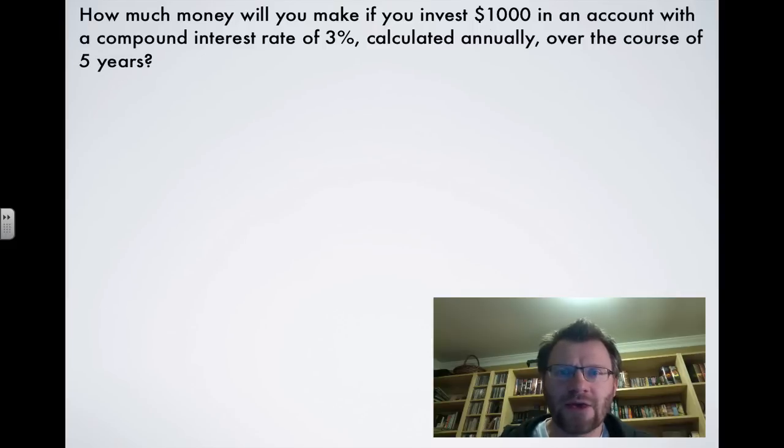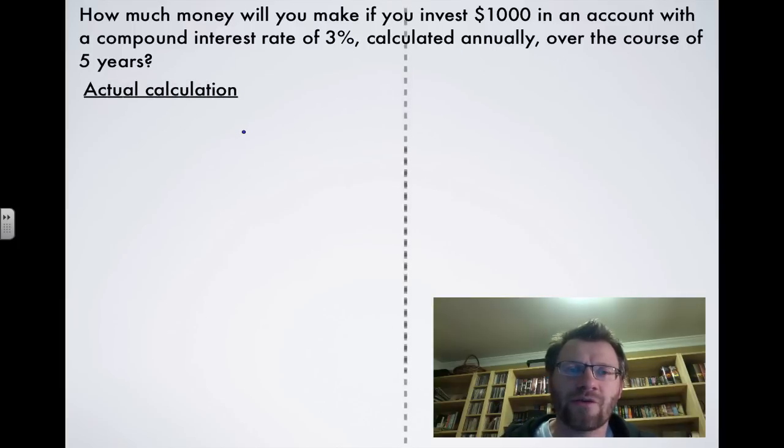All right, so it says, how much money will you make if you invest $1,000 in an account with a compound interest rate of 3% calculated annually over the course of five years? So we're going to do our actual calculation, and then we're going to do the one with variables.